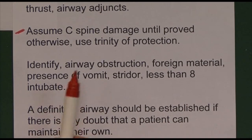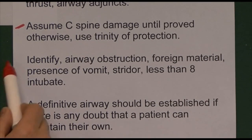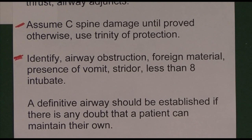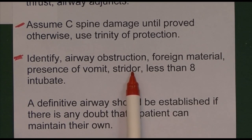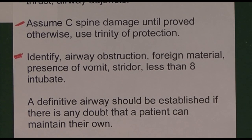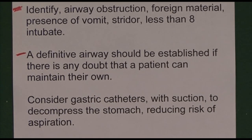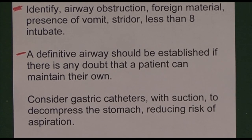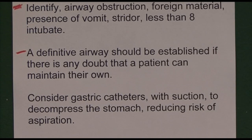The three components of C-spine protection aim to immobilise the head relative to the rest of the body. If airway obstruction is present we want to identify it — it could be foreign material or vomit. Listen for stridor, which means noisy breathing. If the Glasgow Coma Scale is less than 8 we should intubate. A definitive airway should be established if there is any doubt that a patient can maintain their own airway. Airway and C-spine control is our number one priority for every traumatised patient.